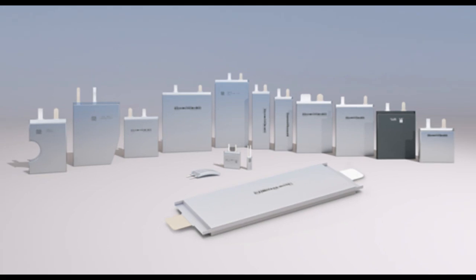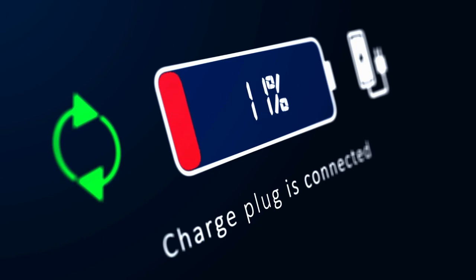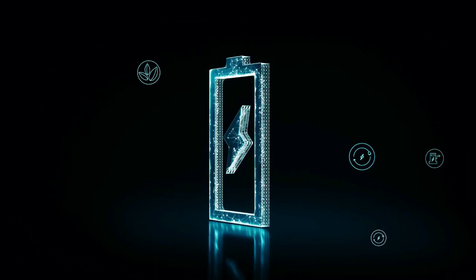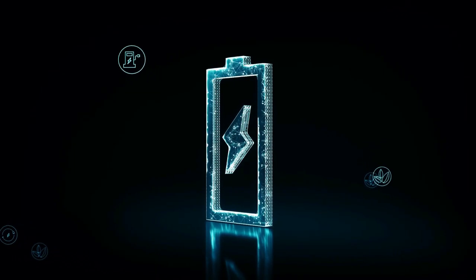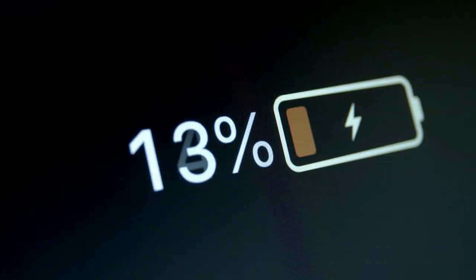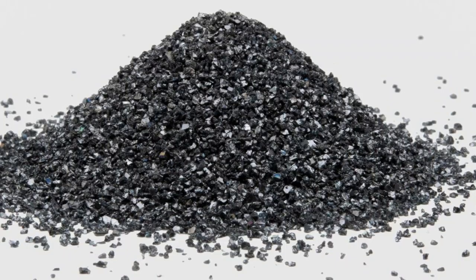Furthermore, silicon-anode batteries retain their capacity exceptionally well over time. After 500 charge and discharge cycles, they maintain a remarkable 80% of their original capacity. This long-term stability and endurance enable faster charging and discharging processes, contributing to the overall energy density of the batteries.